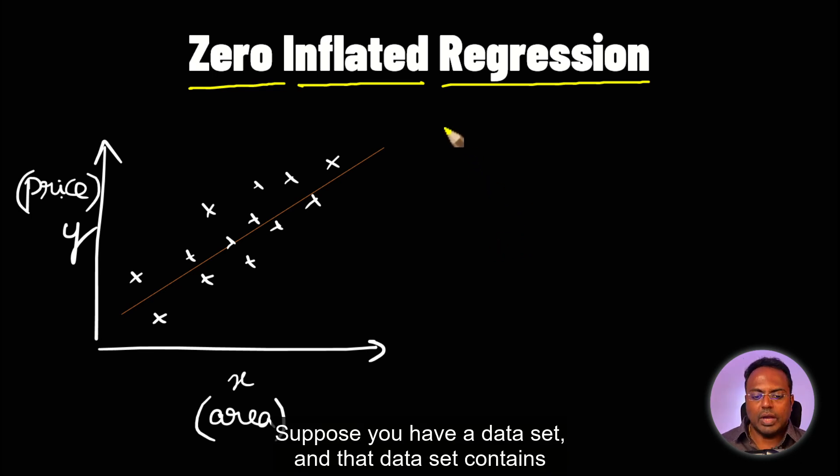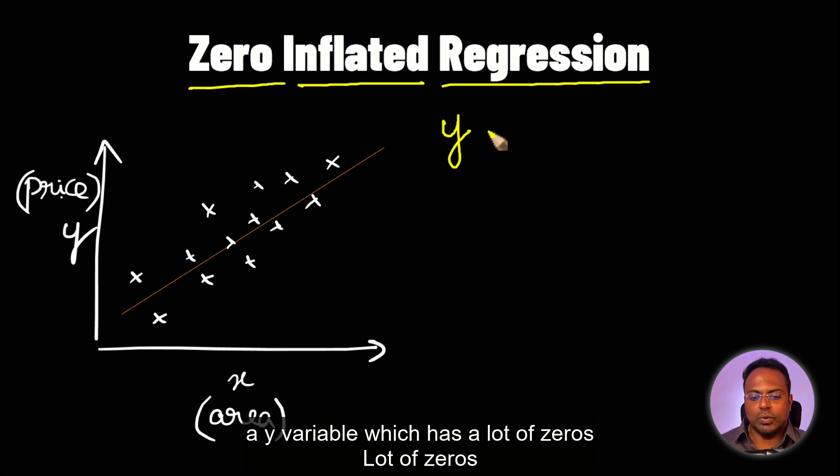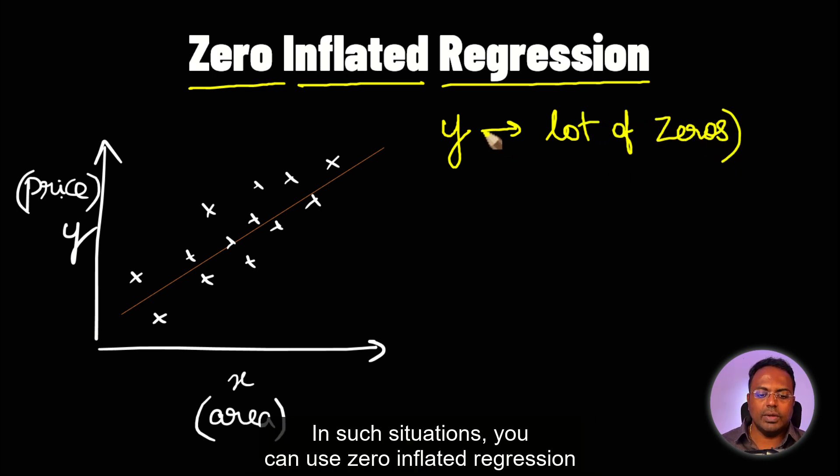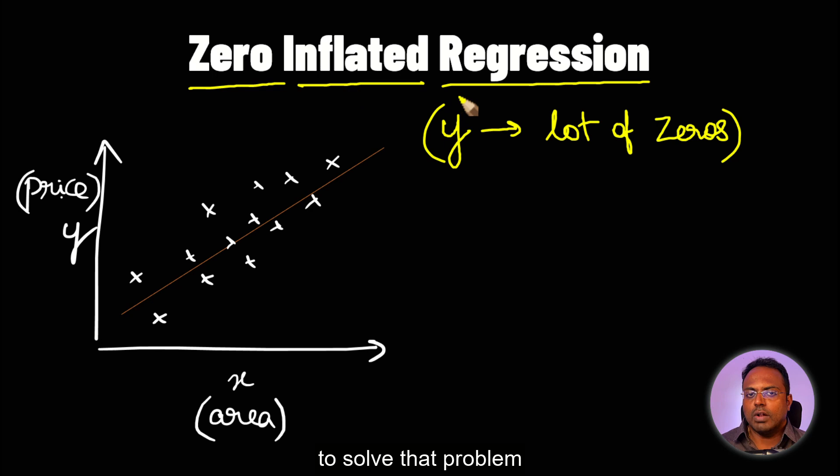First, let's understand. Suppose you have a dataset, and that dataset contains a Y variable which has a lot of zeros. In such situations, you can use zero inflated regression to solve that problem. First, let's understand why this is a problem.